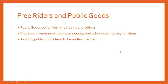Public goods tend to suffer from the free rider problem. Since they are non-excludable, it's very hard to prevent anybody who has not paid or has not paid fully from getting the benefits of the good. As such, public goods tend to be under-provided by the market. Since we assume that firms are profit-maximizing, if they cannot get fully compensated for the costs they have to incur, they will tend to revise downward their production.